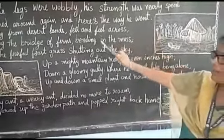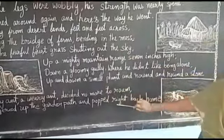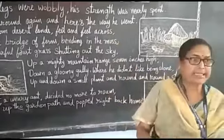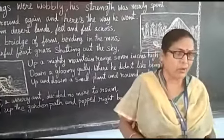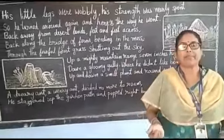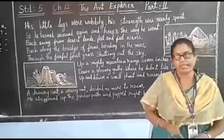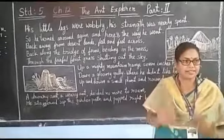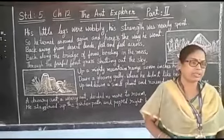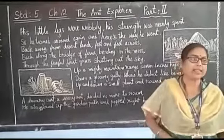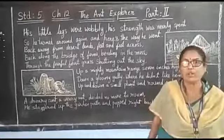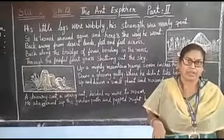Children, this poem you have to remember and learn it by heart. To recapitulate: that little insect was tired of roaming all around. His desire was to explore everywhere, but as he went out he understood the difficulty of the adventurous journey and wanted to return home. He went through the forest, to the mountains, across the sandy land, and over the bridge made with ferns bending over the moss. Thank you, children.